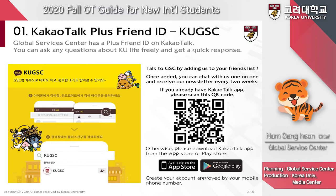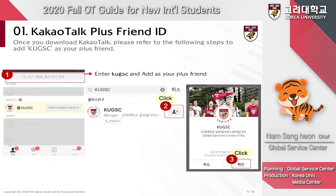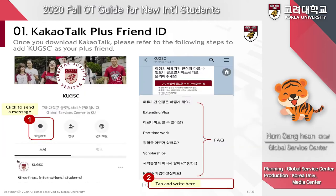You can add us as your friend on KakaoTalk by following these steps. Search K-U-G-S-C as shown in number 1 on the left side, then click on the icon next to number 2, and finally click Confirm as shown in number 3. Once you add us as your friend, you can talk to us or ask questions by clicking on the icon next to number 1, which says Chat in Korean, then type your message and press Send. In this chat room, you can also find an FAQ, so take advantage of this function as well.